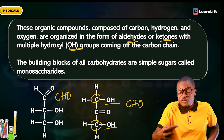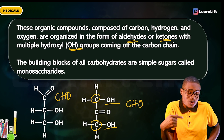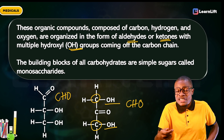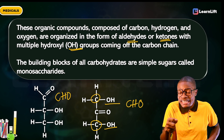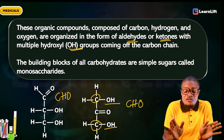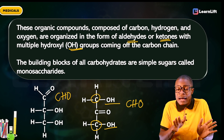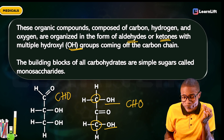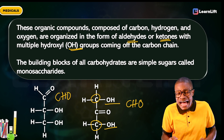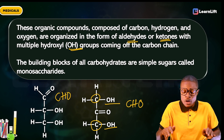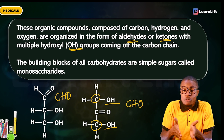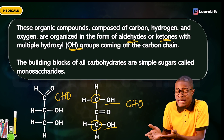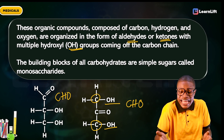The building block of all carbohydrates is the simple sugar called monosaccharides. Just as the basic unit of the nervous system is the neuron, the basic unit of the kidney is the nephron, and the basic unit of the liver is the hepatocyte, the basic unit of carbohydrates is the monosaccharide. If you want a complex form of carbohydrate, you combine numerous monosaccharides together.